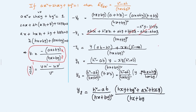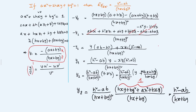This whole expression ax² + 2hxy + by² equals 1 from our given condition. So what is left is: y₂ = (h² - ab) · 1 / [(hx + by)² · (hx + by)] = (h² - ab) / (hx + by)³. Therefore, if ax² + 2hxy + by² = 1, then d²y/dx² = (h² - ab) / (hx + by)³. This completes the proof.